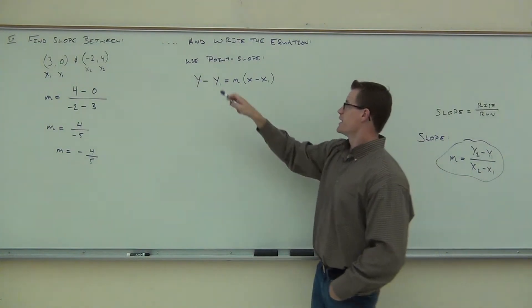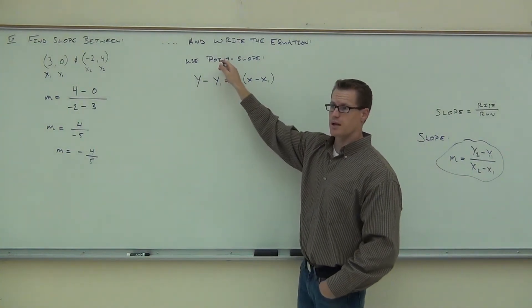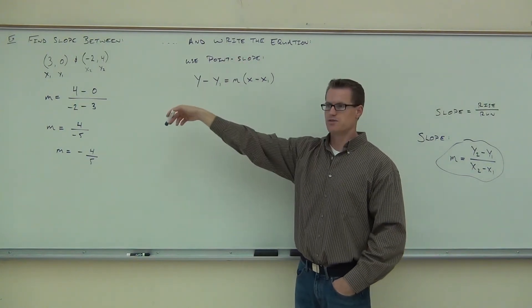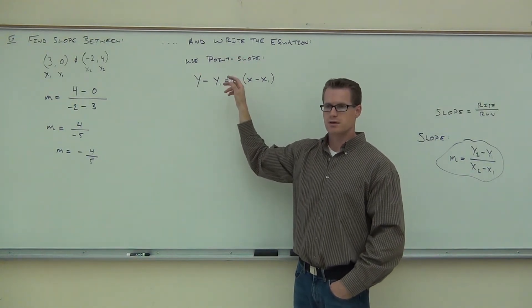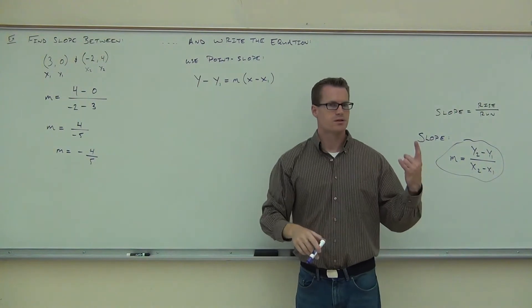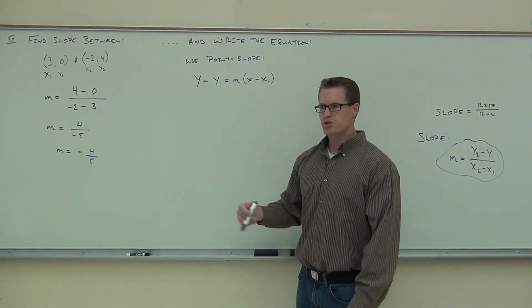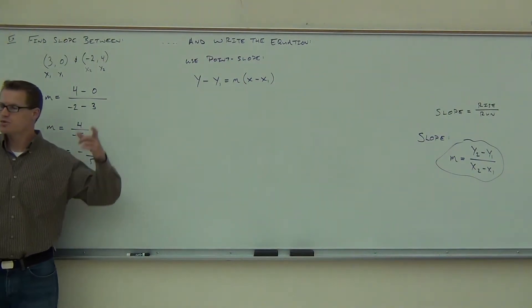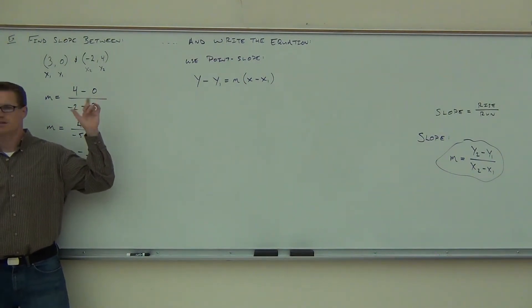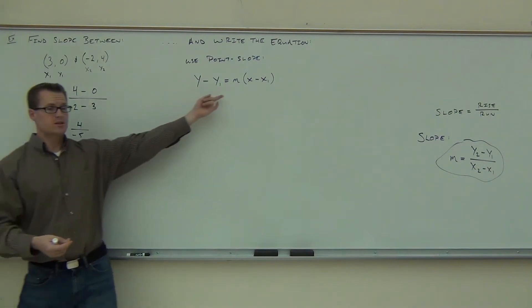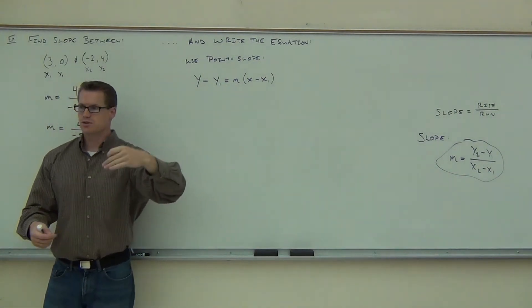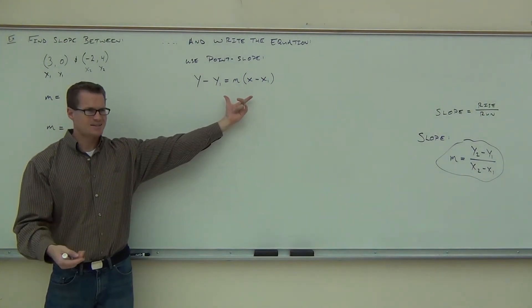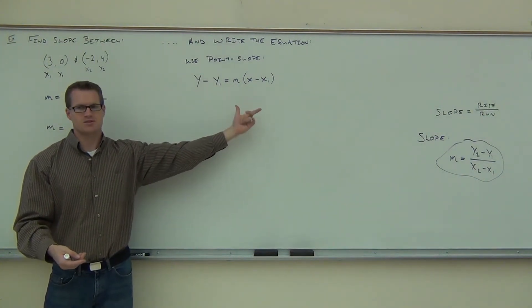Write the equation, use point-slope: y - y₁ equals m(x - x₁). Let's see if we have what it qualifies to use point-slope. You need a point and you need the slope. Do we have the slope? Great, we just found that. Do we have a point? In fact, we have two points. Well wait a second, how do you choose which one to use? Well firstly, it doesn't matter.